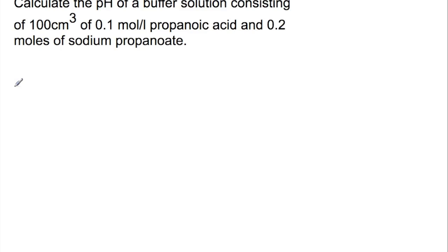This is another example using the same process. We're using the equation pH equals pKa of the acid minus log to the base 10 of the acid concentration divided by the salt concentration. So here we have a total volume of 100 cm³ and we have a concentration of propanoic acid of 0.1 mol per litre.